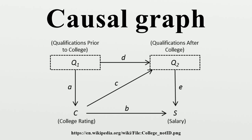Since the error term is correlated with them, the coefficient is endogenous and is not identified in Model 2. However, if we include the strength of an individual's college application, as shown in Figure 3, we obtain Model 3. By removing the latent variables from the model specification, we obtain Model 4. Now the coefficient is identified and can be estimated using a regression. This can be verified using the single-door criterion, a necessary and sufficient graphical condition for the identification of structural coefficients using regression.